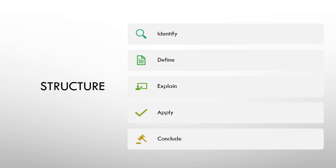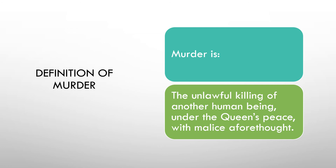A reminder of the structure: we need to identify the problem as murder, define murder to give structure, explain and apply each element, then conclude whether murder is made out. Don't forget that if we find the defendant guilty, we give a sentence. The definition: the unlawful killing of another human being under the Queen's Peace with malice aforethought — this will frame your response.